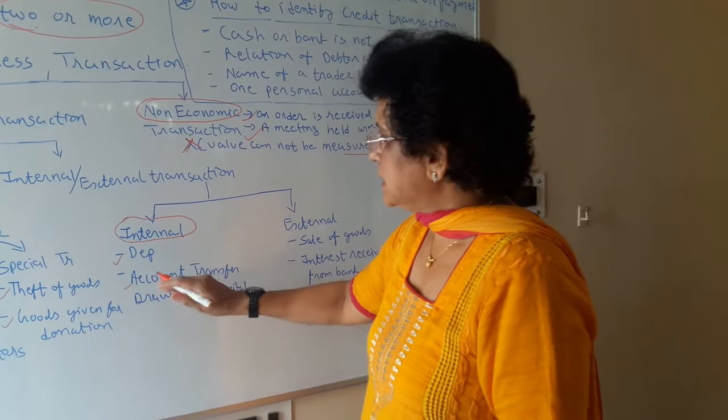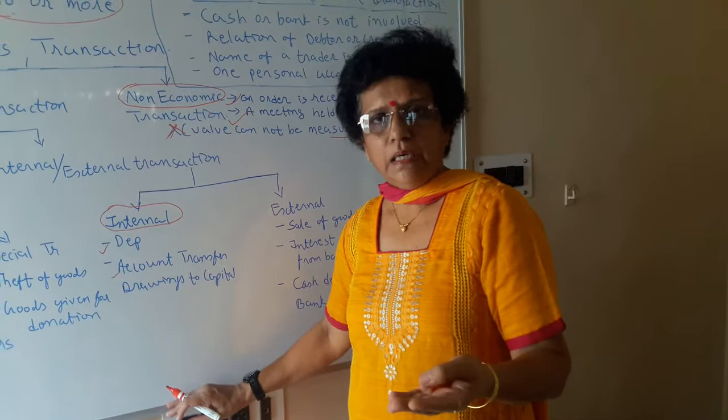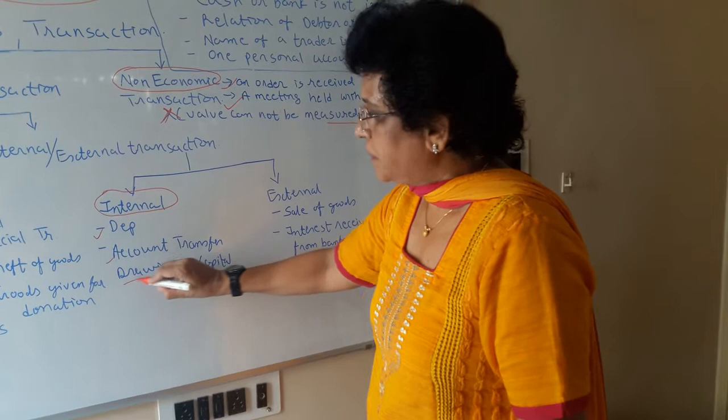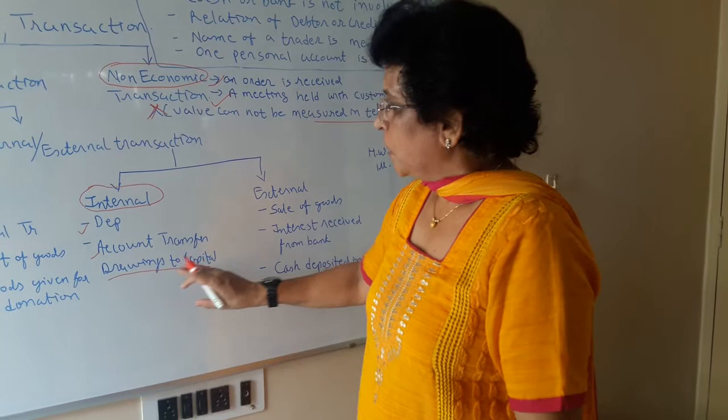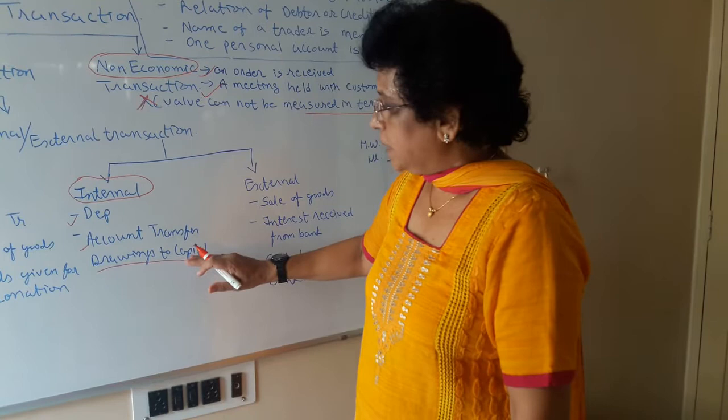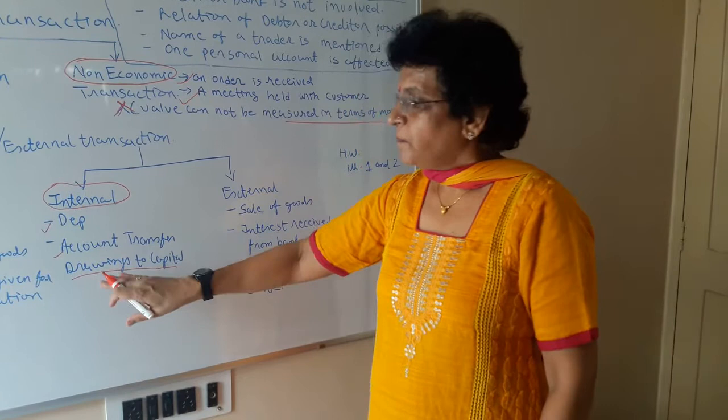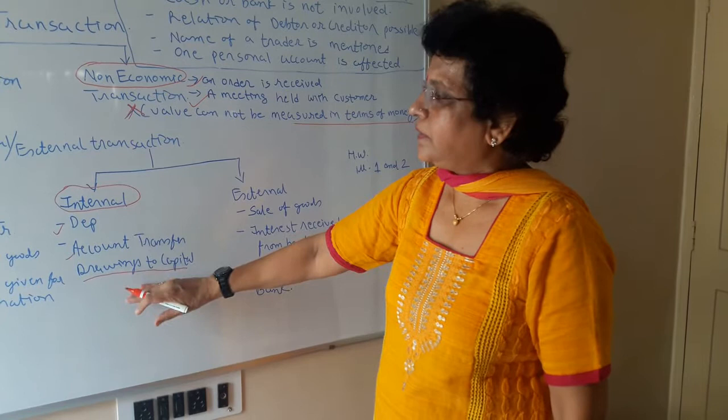The next internal transaction is account transfer. Drawings means the amount withdrawn by the owner, and because of drawings the capital decreases. At the end of the year, you are supposed to transfer the drawings balance to the capital account, so you write a journal entry. The two folds in this are: one is capital account debit, and two is drawings account credit. Capital decreases and the drawings account is closed and transferred to the capital account. In this manner, there are many more internal entries which you have to record in books of account.